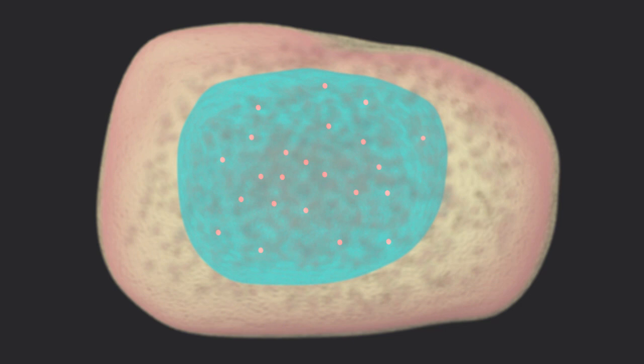The goal of mitosis is to accurately segregate each chromosome. The chromosome directs this process from a locus called the centromere.